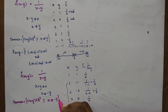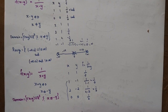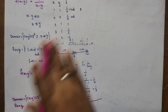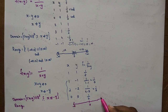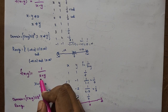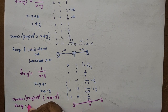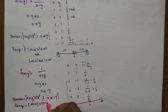The range of 1/(x+y): the denominator can range from minus infinity to infinity, but cannot be 0. So f takes all real values except 0. The range is (−∞, 0) union (0, ∞).